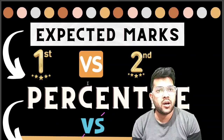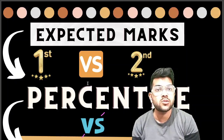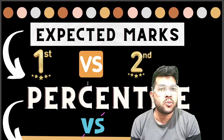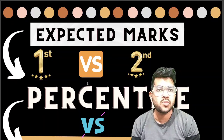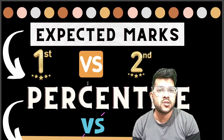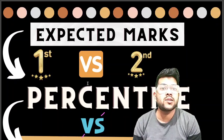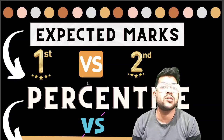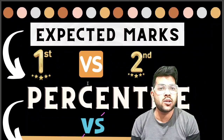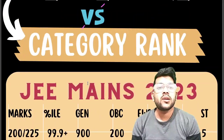Again, I would like to confirm this is updated data after lots of analysis. I am providing complete information for first and second attempt both. I will provide the marks, the corresponding percentile, and most importantly, the corresponding category rank — that is General, EWS, OBC, SC, ST. For PWD students, there is a separate video in the PWD playlist on this channel and on Admission Academy in Hindi.